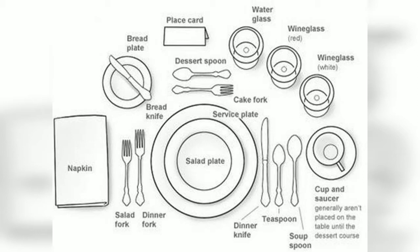For basic understanding: on the right hand side you have the spoon and the knife, and on the left hand side you have the fork. The spoons, the knives, and the forks are placed in a specific manner — always remember they are placed from outside to inside.